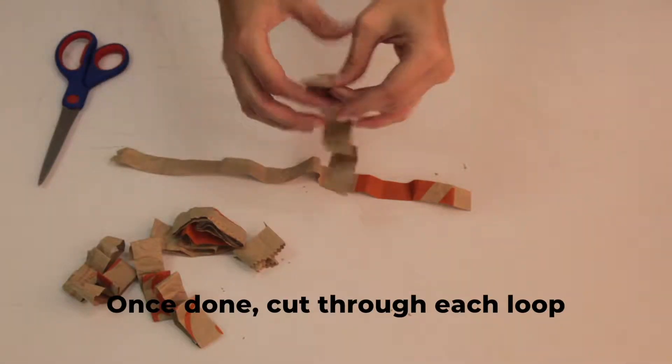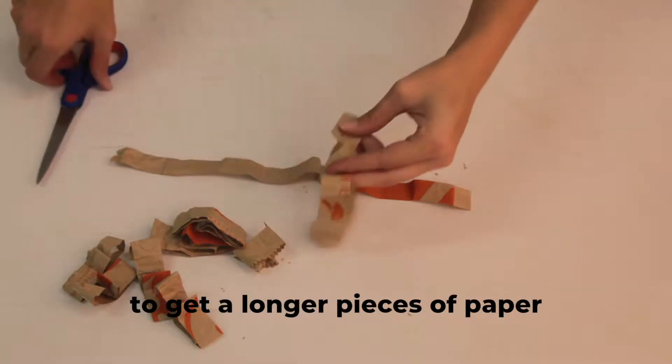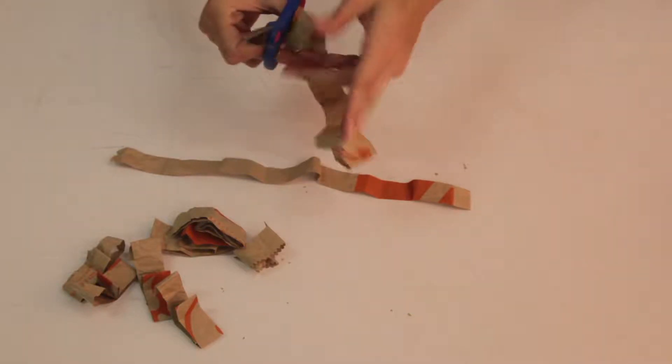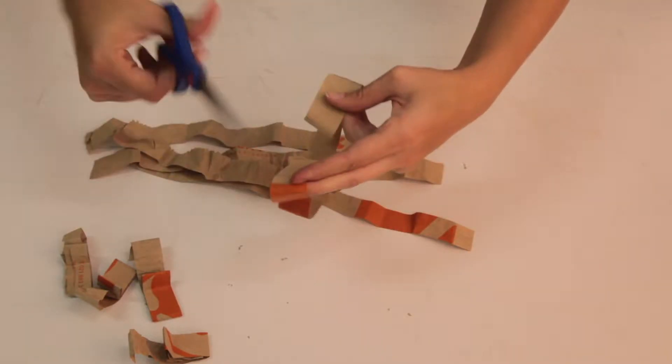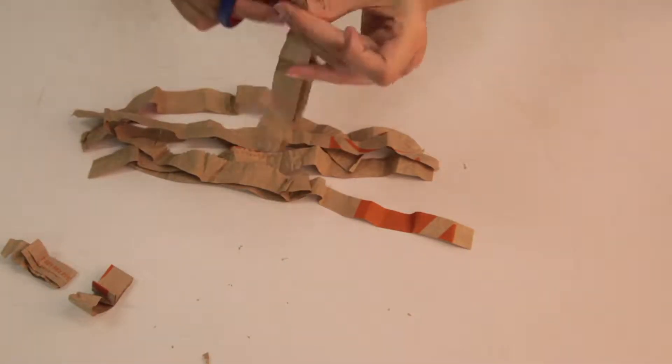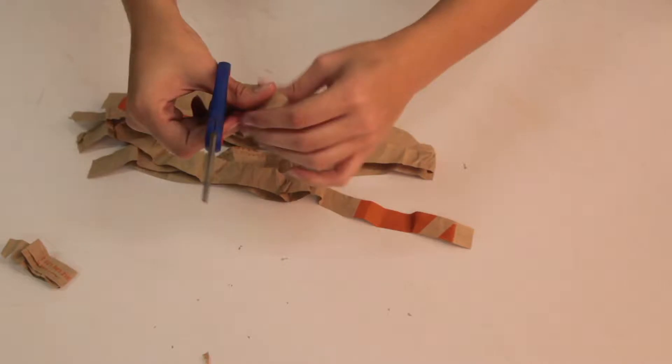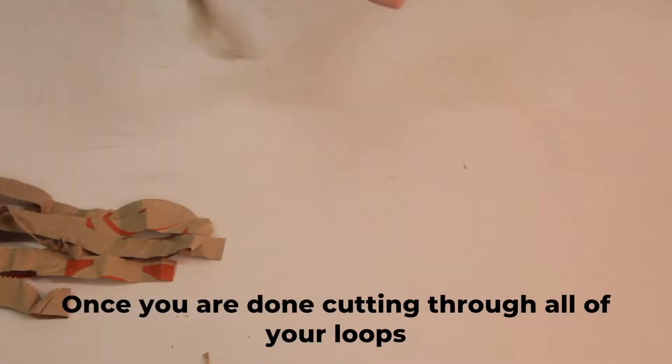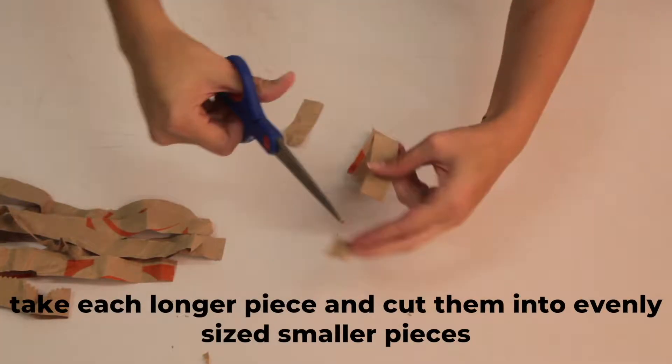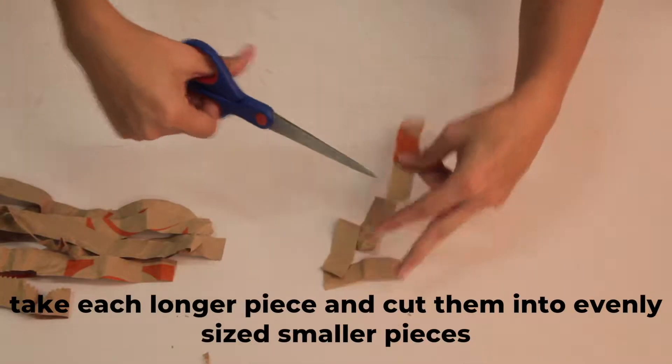Once done, cut through each loop to get a longer piece of paper. Once you are done cutting through all of your loops, take each longer piece and cut them into evenly-sized, smaller pieces.